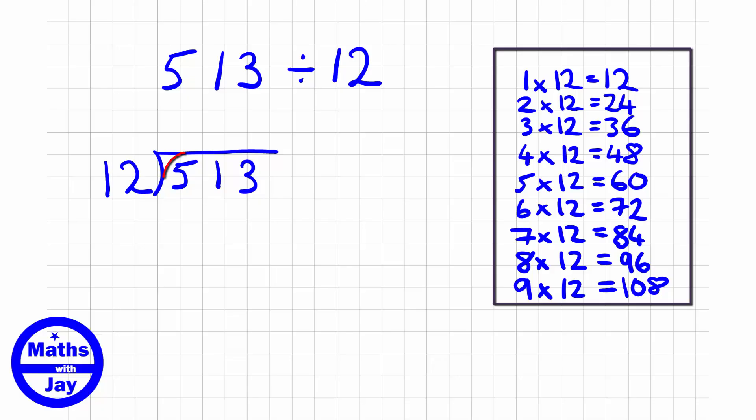So what I'm doing first of all is I'm thinking, does 12 go into 5? And it doesn't because 12 is bigger than 5, isn't it? Then I'm thinking does 12 go into 51, so I'm moving one further along my number there. So 12 doesn't go into 5, but 12 does go into 51.